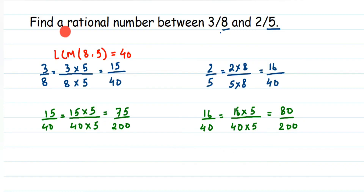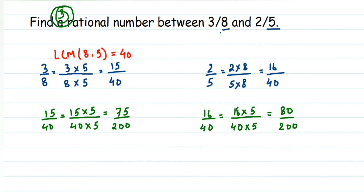Since the question only asks to find a rational number — not a specific count like 5 or 10 — I chose to multiply by 5. If you are asked to find, say, 3 rational numbers and there's no gap, take a number greater than 3. The greater the number you multiply by, the more gap you get and the more rational numbers you can write down.